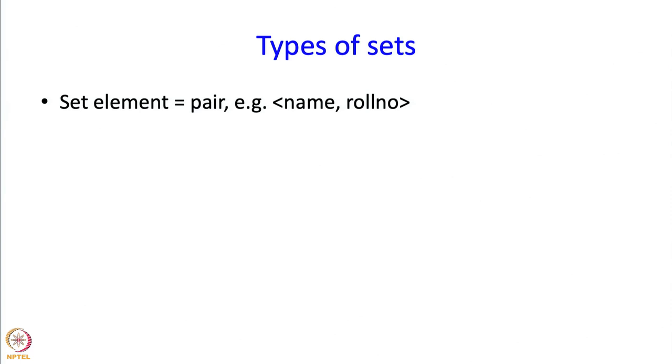So for example the elements of the set might be a pair. So for example we might be storing pairs of the form, name and the roll number of that student. So this is very nicely represented using a map data structure or a map class in the standard library. SL in this lecture is going to mean standard library.